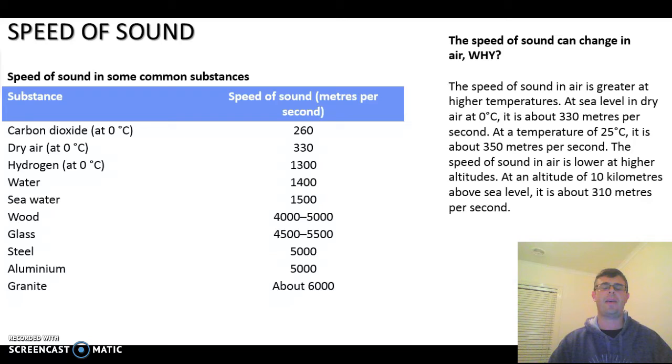So now we'll look at a couple of figures of how fast sound actually moves through things. We've got some examples here of carbon dioxide, dry air at zero degrees. And it's interesting to note that we've got those at zero degrees, because sound will travel through air at different speeds depending on the temperature. I'd like you to go and Google and find out why the speed of sound changes in air. So what's the reason behind it?